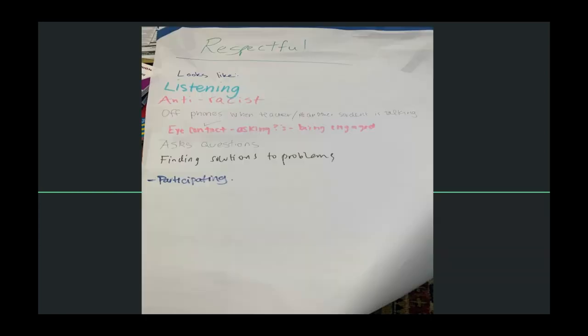Listening. Being anti-racist. Okay, not just accepting that, you know, well, I'm not racist, so if others are, not my problem. Okay, when you're anti-racist, you are against racism across the board. It's never okay. You're off phones when the teacher or another student is talking. That's respectful, right? That's telling that person that what they're doing is important and you don't think it's so unimportant that you can just be on your phone. Eye contact and asking questions. Being engaged. We'll talk more about that in just a moment.